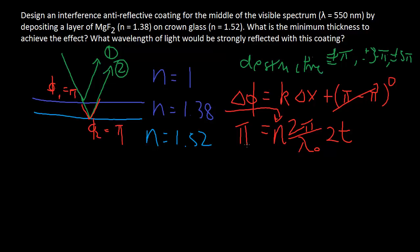We're arranging, we get that, t is equal to λ₀ over 2n. You can think of it as the λ in the medium over 4,